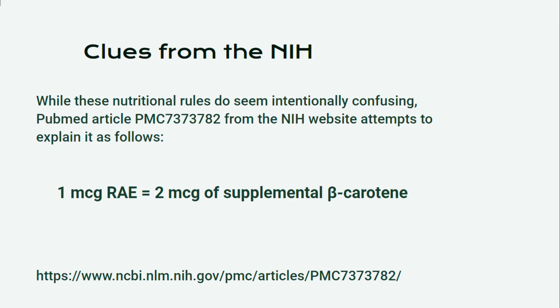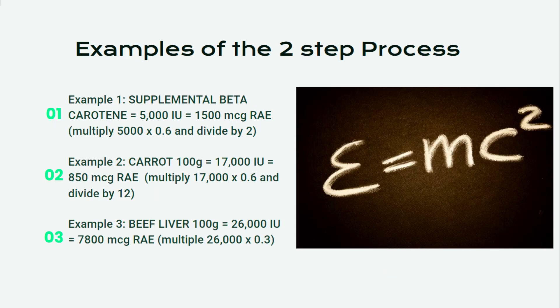While these nutritional rules do seem intentionally confusing, PubMed article PMC 7373782 from the NIH website attempts to explain it as follows: 1 microgram RAE equals 2 micrograms of supplemental beta-carotene. Therefore, the two-step process above can be used to calculate the amount of beta-carotene in food.